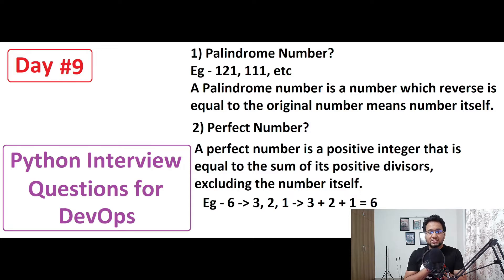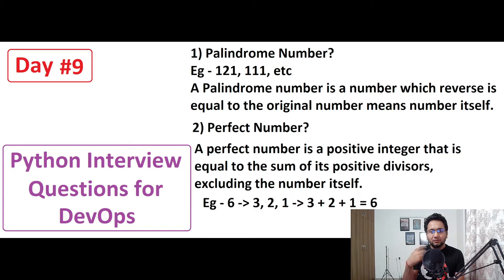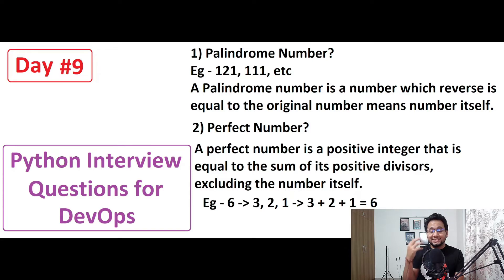Consider a number like 121 or 111. A palindrome number is a number whose reverse is equal to the original number itself. For example, if you take 121 and reverse it, it is again 121. So it is a palindrome number. The next question is: what exactly is a perfect number?